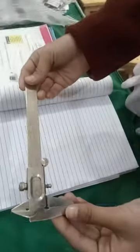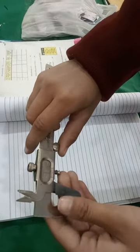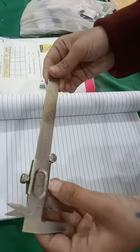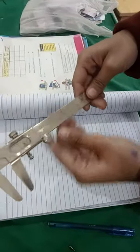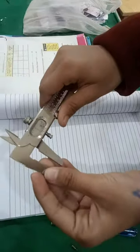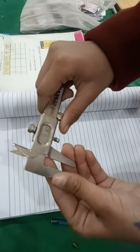The instrument that I am holding in my hand is known as a vernier caliper. This vernier caliper consists of two parts. One of which is stationary and the other one is movable. The stationary part of the vernier caliper is known as the main scale. While the movable part of the vernier caliper is known as the vernier scale.